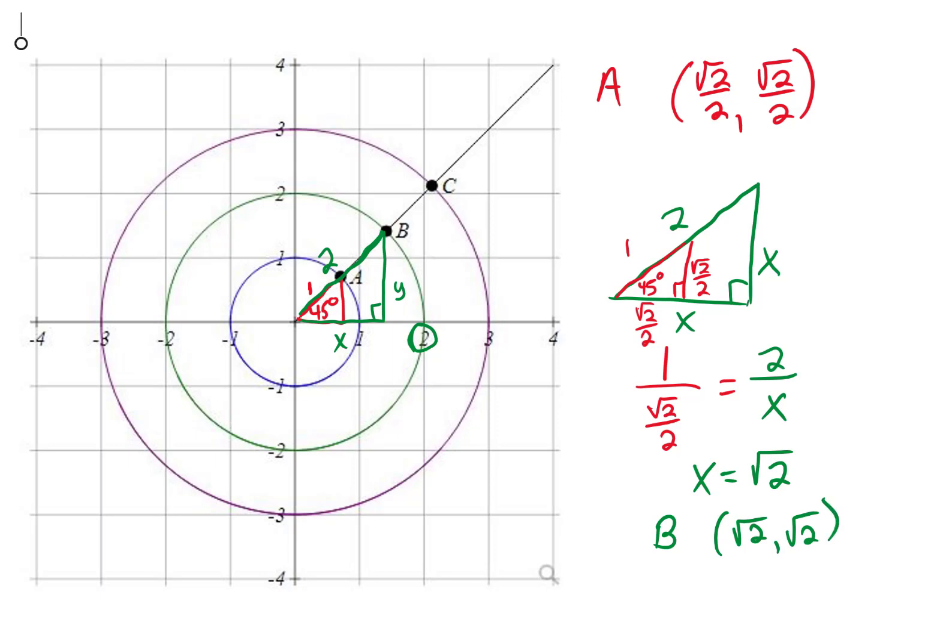This triangle is scaled by a factor of 2 since the hypotenuse is twice as long, so we could take the points in A and multiply them both by 2 and get the points in B.